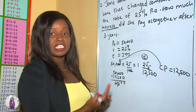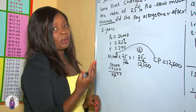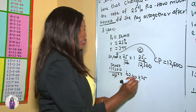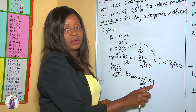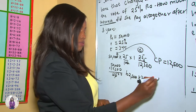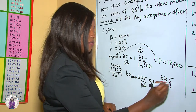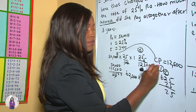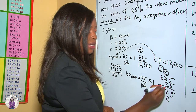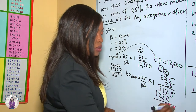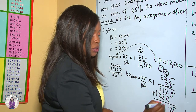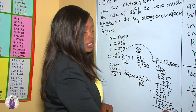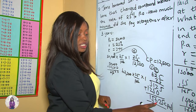For year two: CI = $62,500 × 25/100 × 1. Working this out, 625 × 25 = 15,625. So the compound interest for the second year was $15,625.